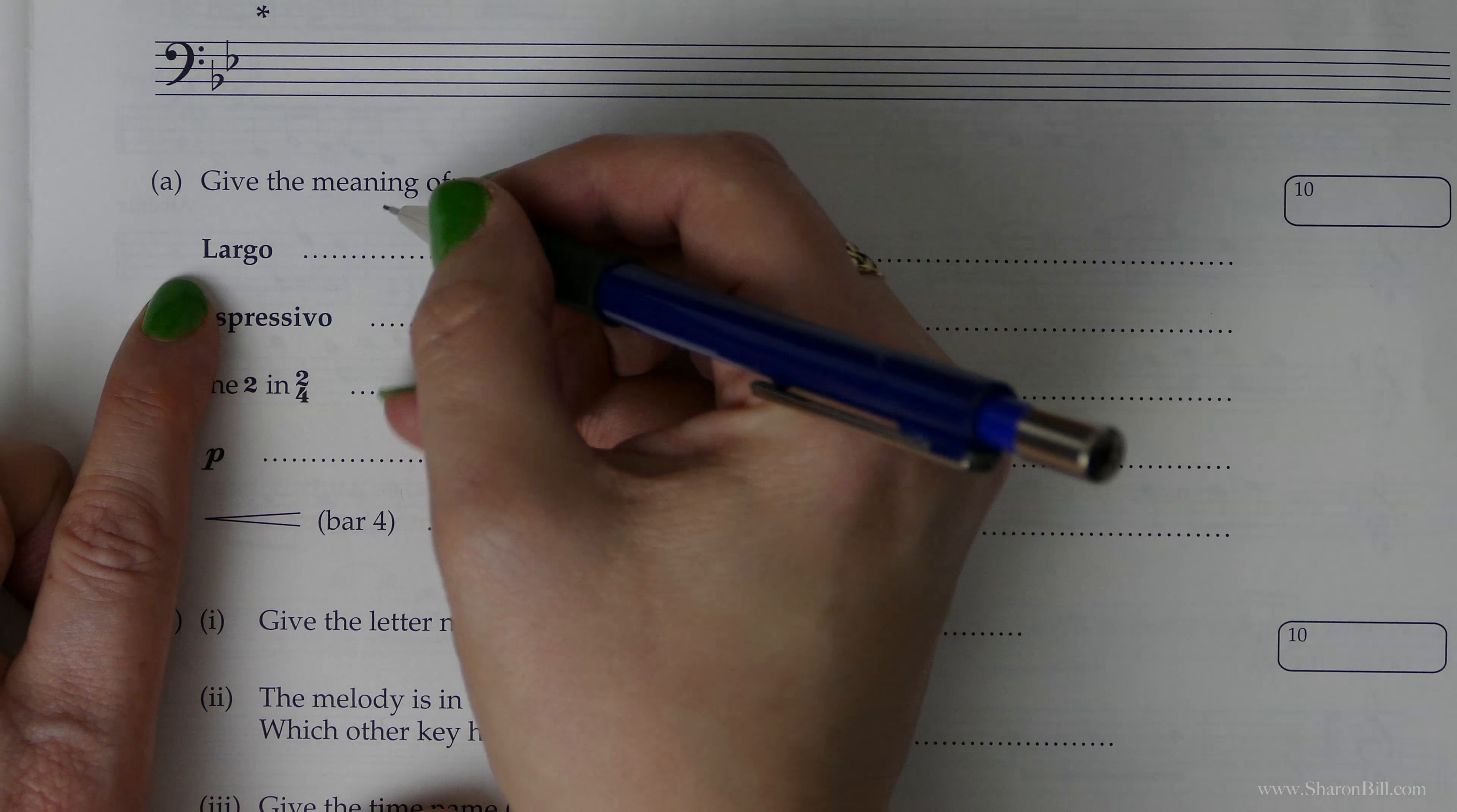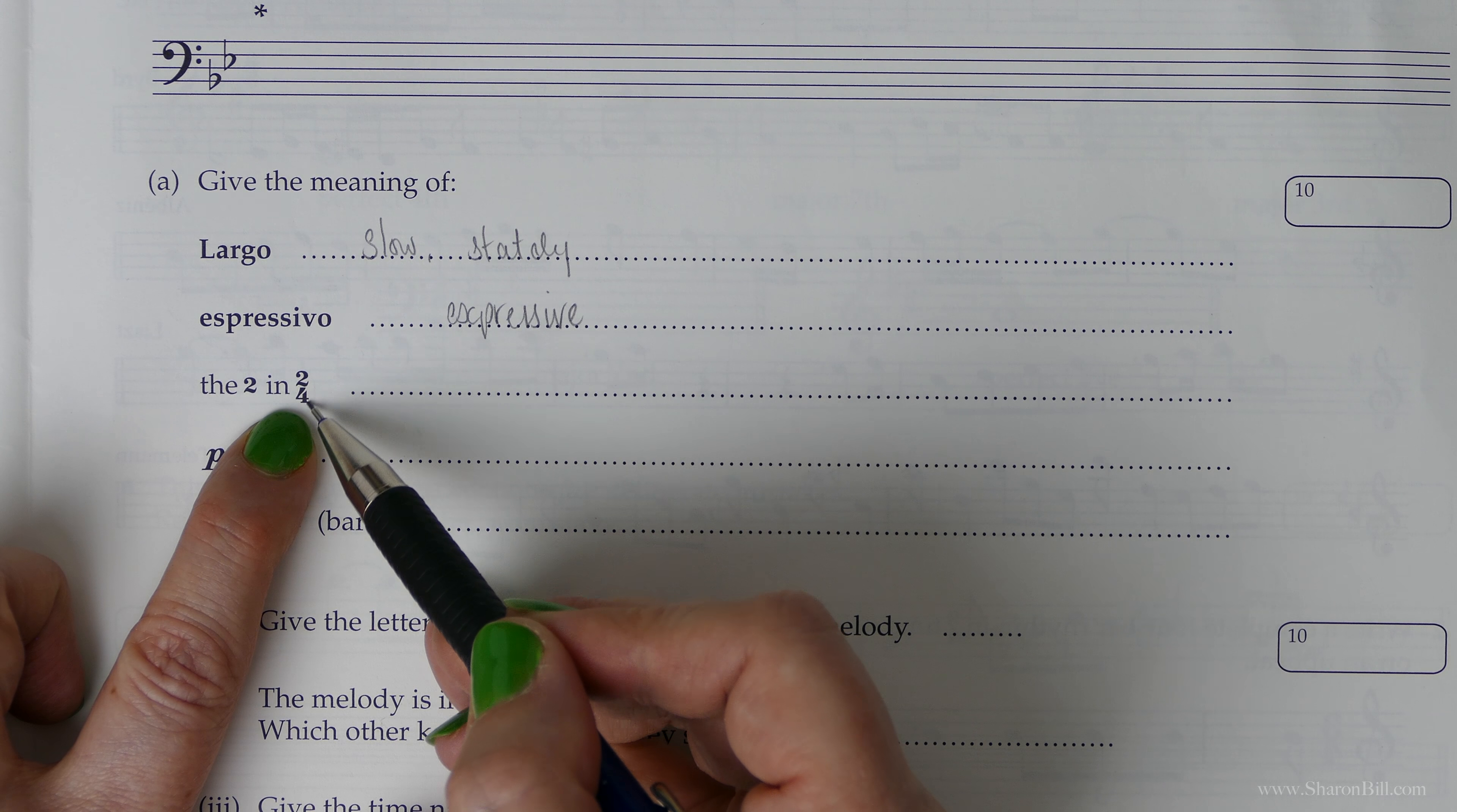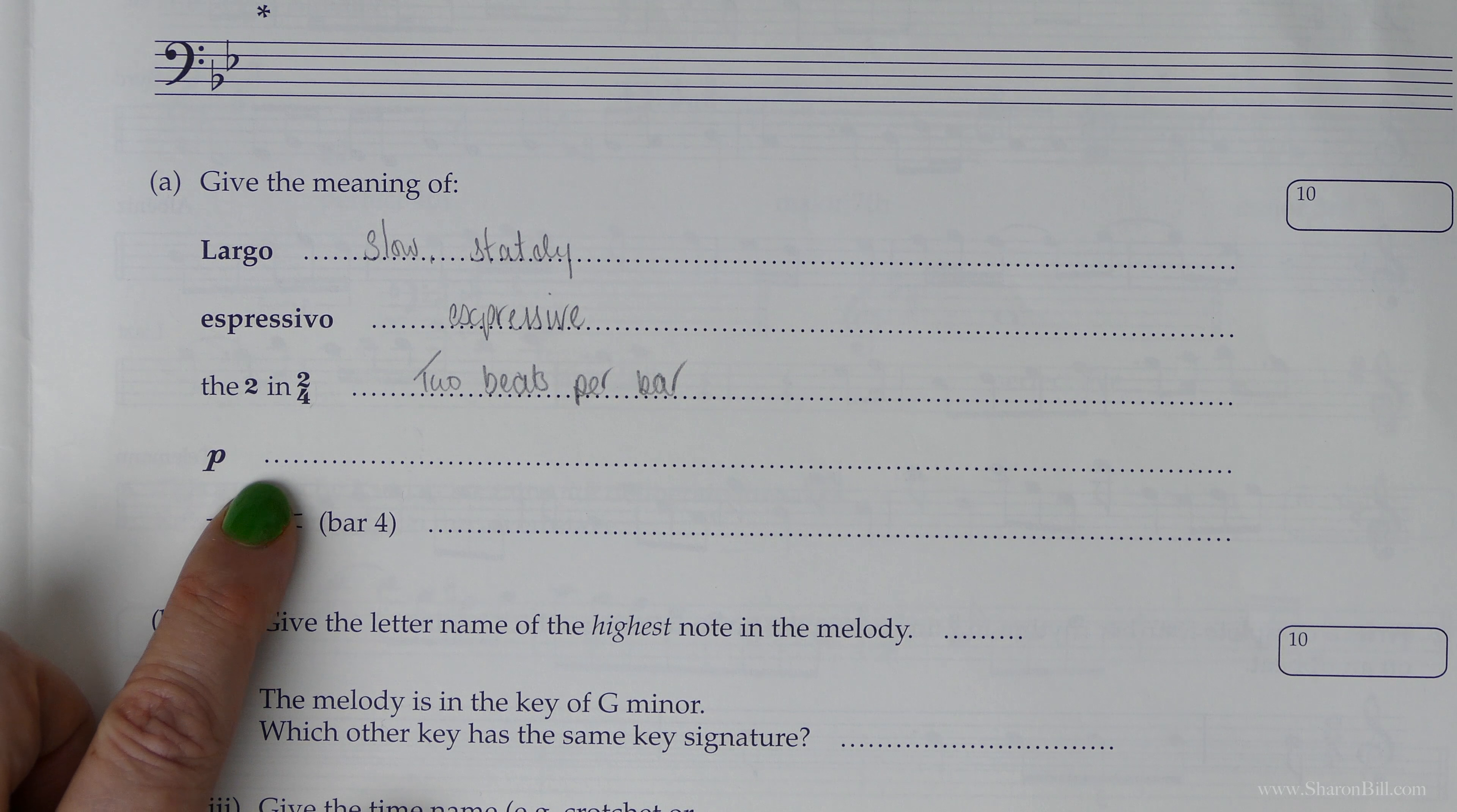The meaning of largo is slow, literally slow and stately. Espresivo means expressive, not difficult to guess. The 2 in the time signature 2 over 4—remember the top number deals with how many beats per bar, the bottom number deals with what sort of beat. So the 2 literally means 2 beats per bar. It's the bottom number 4 that tells us we're dealing in crotchet beats or quarter notes.